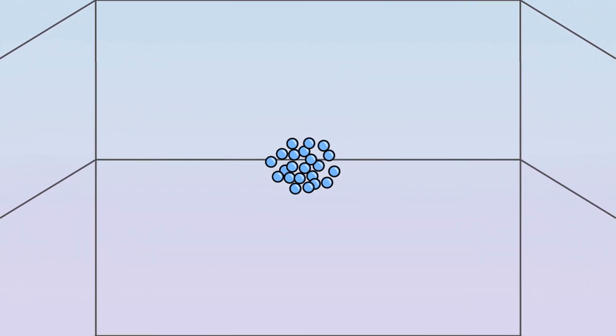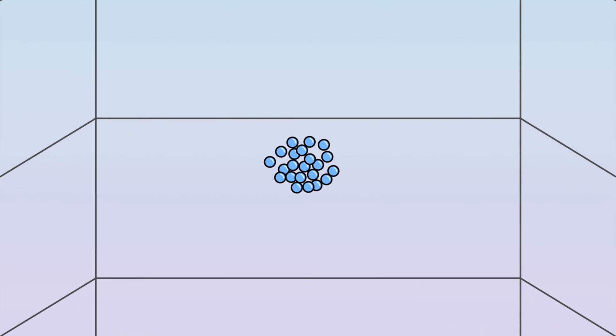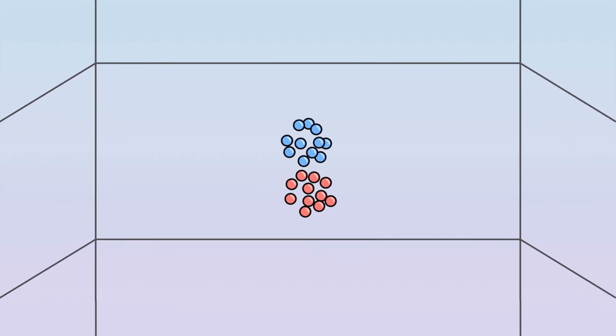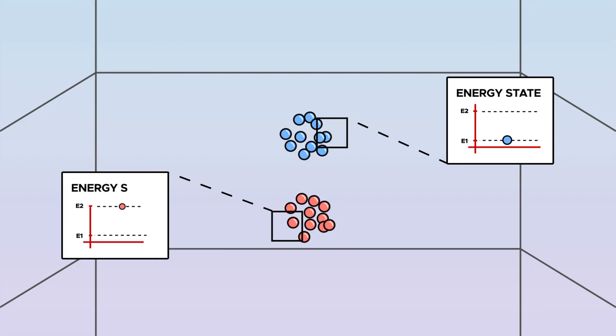While they are falling, we hit the cloud of atoms with a pulse to split it into two groups. These groups are differentiated based on their energy state.